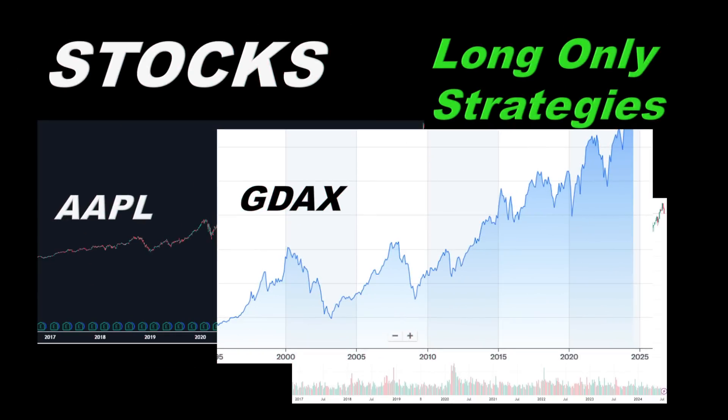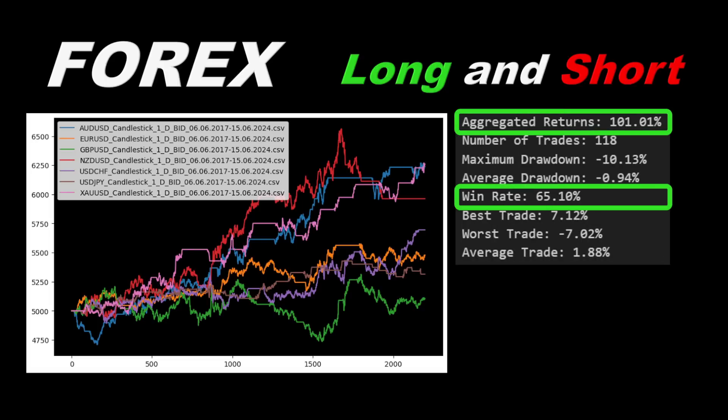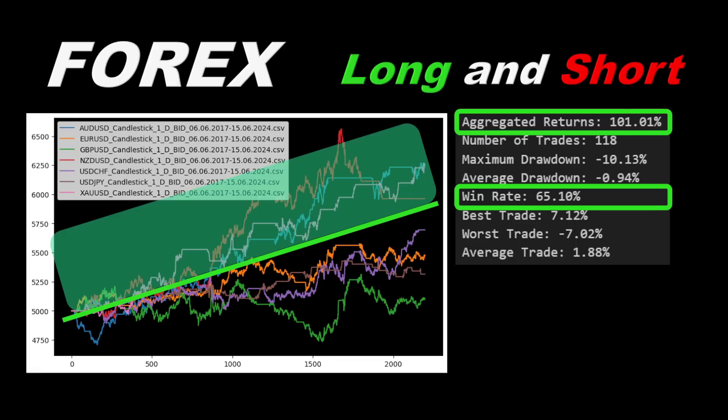To test the robustness of the strategy, we need to apply it in different conditions. So I also tested the strategy on forex data, allowing both long and short trades to avoid any bias, and I still got positive results: 101% in returns and a win rate of 65%. However, notice that the equity results can be split into two clusters — one on the winning side and the other more of a break-even side.